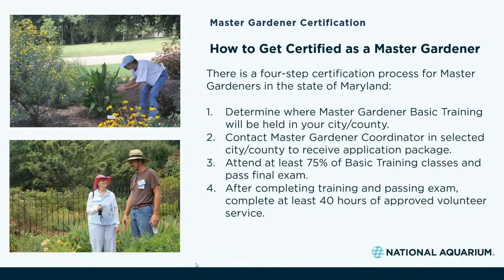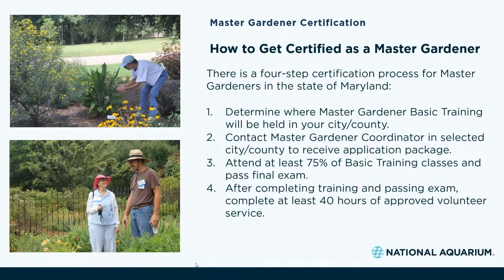That brings us to how to get certified as a Master Gardener, which is a four-step certification process here in Maryland. Essentially, you'd determine where your Master Gardener basic training is hosted — either by your city or your county. You contact the Master Gardener coordinator for your city or county to receive your application package. You attend those basic training classes and pass a final exam. And then after you've completed those, you'll complete at least 40 hours of approved volunteer service, which goes by quicker than you might imagine.